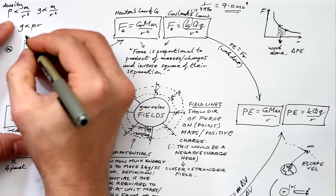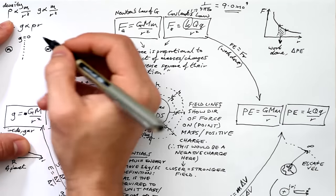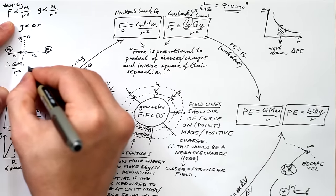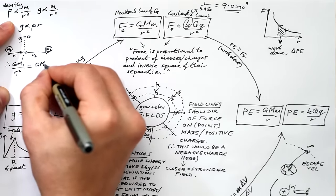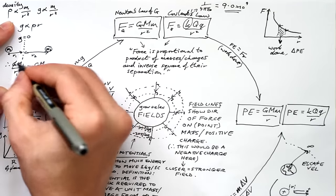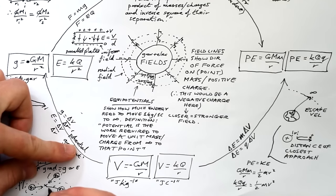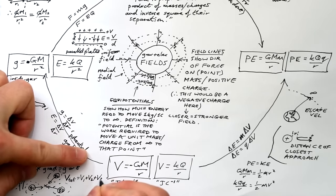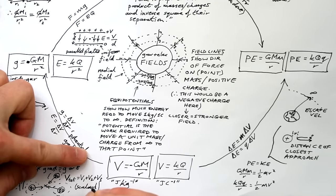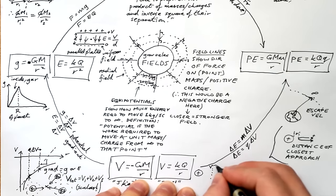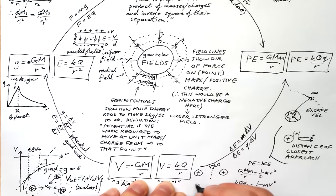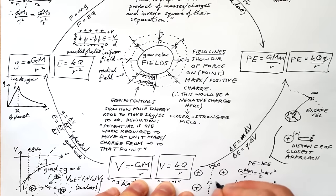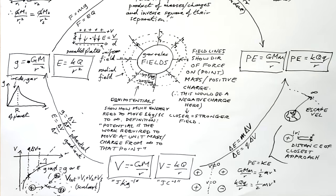If we have two masses, somewhere between them the resultant field strength equals zero — we can say the field strengths are equal and opposite: GM over r² equals GM over r², and the G's cancel. For potential, since it's a scalar, we simply add all the potentials at any point — GM over r plus GM over r or kq over r plus kq over r. Between two like charges potential cannot be zero, but between two unlike charges it can, because one provides positive potential and one provides negative.